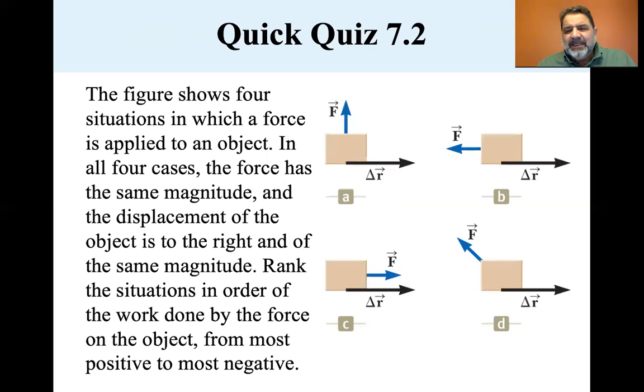Rank the situations in order of the work done by the force on the object from most positive to most negative. Okay, the most positive, well, you've got the force, when the force is in line with the displacement, that's the maximum. That's the cosine of theta is equal to zero. So all of these, it's force, it's force times delta R times the cosine of theta. So really it's the cosine of theta that we're measuring to rank them.